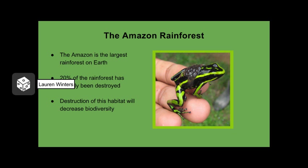The Amazon rainforest in South America is the largest rainforest on Earth. 20% of this rainforest has already been destroyed. Destruction of this habitat means destroying biodiversity. As discussed earlier, rainforests contain 50% of the Earth's species. When we burn the rainforest or cut trees down for logging, we are destroying the sources of food and shelter for all of the animals who live there.